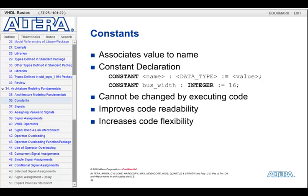To declare a constant, you use the keyword 'constant' followed by an identifier name, the data type, colon equals, and the value you are assigning to that constant. The value must be valid for the constant's data type. So in this example, you can see that the identifier 'bus_width' is being set up as an integer and being assigned a value of 16.